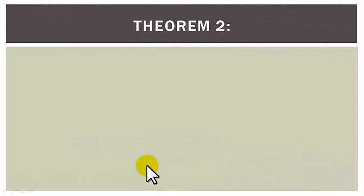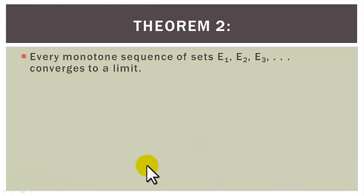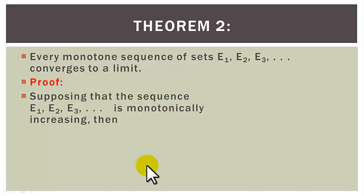Term 2: Every monotone sequence of sets E1, E2, E3 and so on converges to a limit. Proof. First, let us suppose that the sequence E1, E2, E3 and so on is a monotonically increasing sequence.